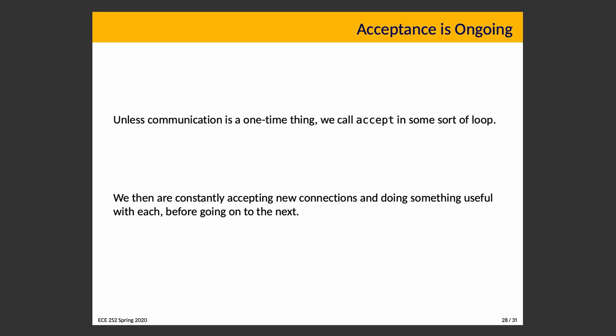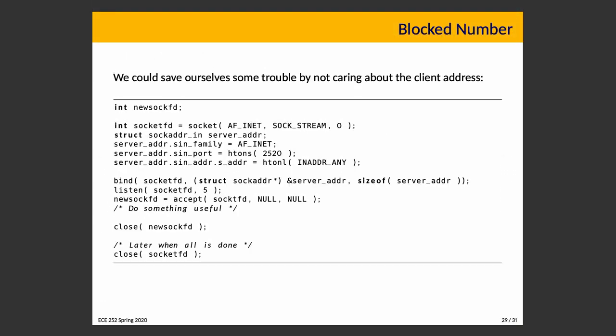We probably want to call accept() in a loop, since a typical server handles many incoming requests. A compact version that disregards client address information passes NULL as the final two parameters to accept(). There is a typo in the slide — an 'e' is missing in socket_fd — which will be corrected in GitHub.